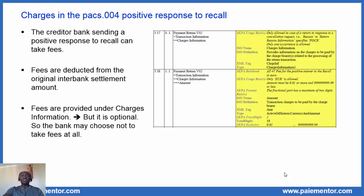The second specificity is the charges in the PAX4 positive response to recall. Like the PAX4 used for the normal return, the PAX4 used as positive response to recall is used to return funds. However, the creditor bank sending a positive response to recall can take fees — that is not the case for normal returns where fees cannot be taken. When sending a normal return, the bank must return the total amount it received. We will get back to that in the next slide. When sending a PAX4 positive response to recall, fees can be deducted from the original interbank settlement amount. Fees are provided under charges information, but note that it is optional — even if fees can be taken, a bank may choose not to take them at all.